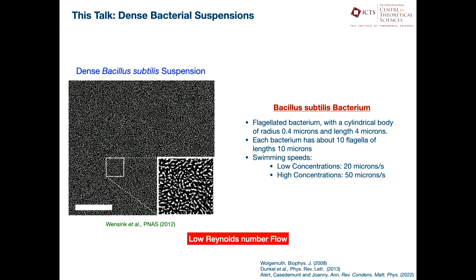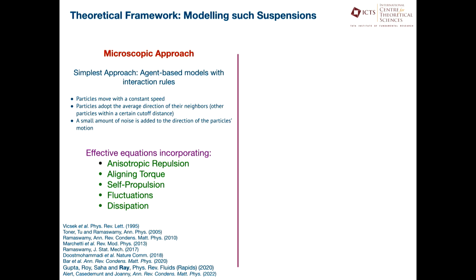The question one begins with at the zeroth level is: how do I start to think about modeling such suspensions? There are essentially two approaches. One particular approach would be to use agent-based models. The VICSEC model for students could be one of the starting points to think about how you construct such agent-based models, and then you add in more complexity and more physics to what these individual agents should do.